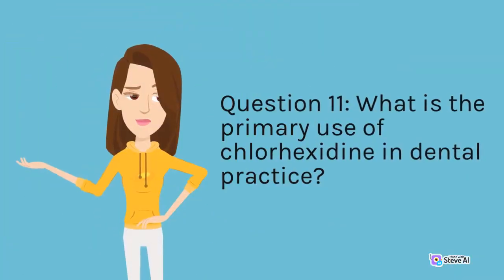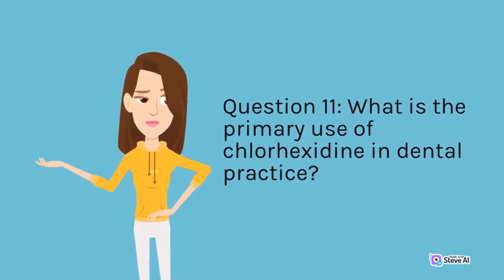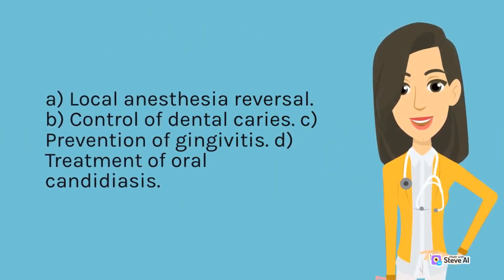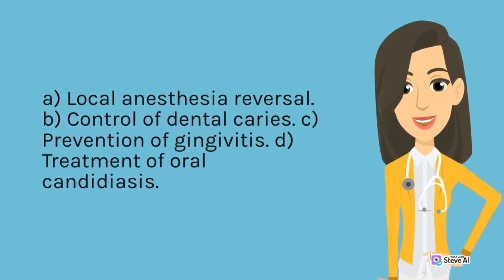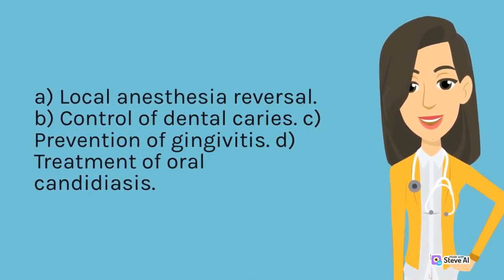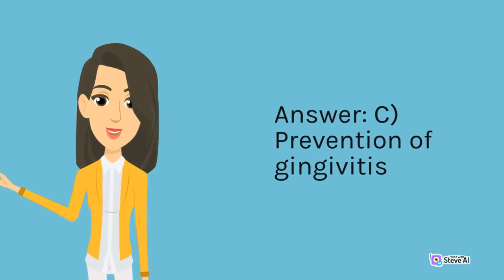Question 11. What is the primary use of chlorhexidine in dental practice? A. Local anesthesia reversal. B. Control of dental caries. C. Prevention of gingivitis. D. Treatment of oral candidiasis. Answer: C. Prevention of gingivitis.